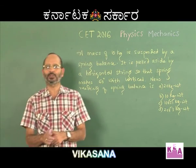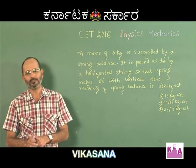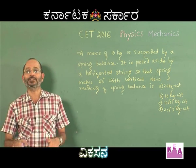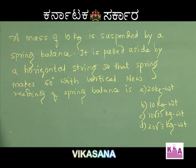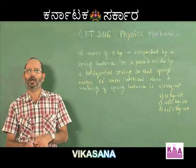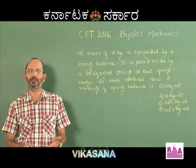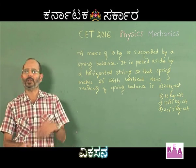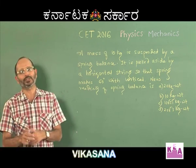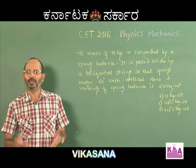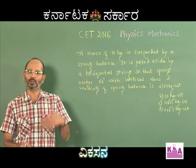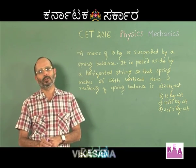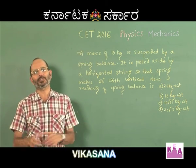Let me share a couple of points associated with the spring force. The spring force is written as kx, where k is the spring constant — basically the amount of force needed to produce a unit deformation in the spring. Deformation means either elongation or compression. To produce a unit elongation or compression, the force required is the spring constant. So kx is how you write the spring force.